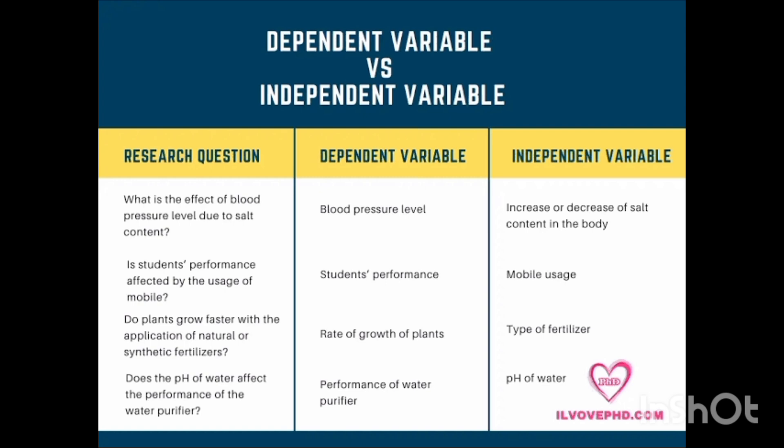Another example — the research question is: 'What is the effect on blood pressure level due to salt content?' The dependent variable is blood pressure level and the independent variable is the increase or decrease of salt in the body. Obviously, if you increase the salt then you will have higher blood pressure — there is a direct relation between blood pressure and usage of salt.